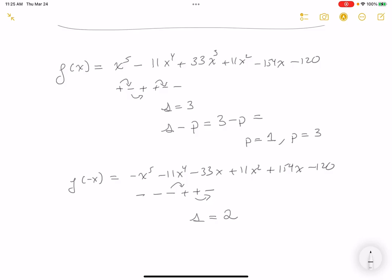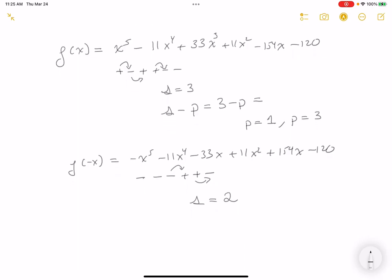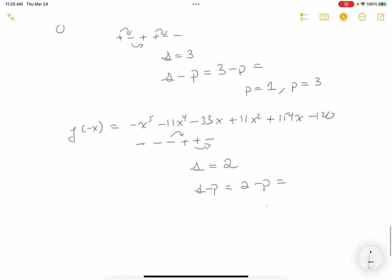Let me remind you what we did. We rotated the curve about the y-axis, so the negative roots become positive roots. What we do, S minus P, it's going to be two minus P, and it's got to be a non-negative even integer. So what could P be? P could be two or P could be zero.